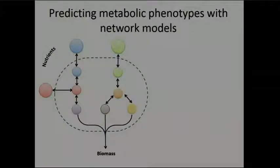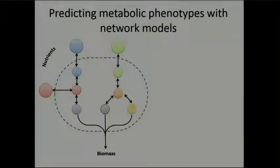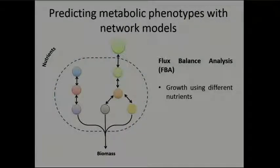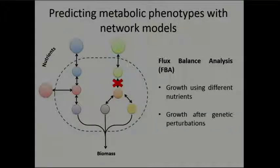I'm going to use metabolic network models to do this analysis. A metabolic network is a collection of reactions that tells you how different nutrients are transformed into new cells by synthesizing biomass components. Methods like flux balance analysis use this collection of reactions — the stoichiometry, information about biomass composition, and simple steady-state assumptions — to predict the behavior of this network, such as whether biomass production is possible under different growth conditions or after genetic perturbations like deleting a gene or sets of genes.